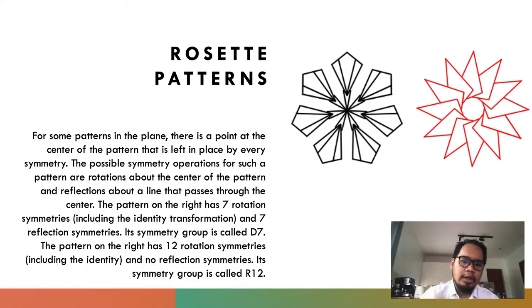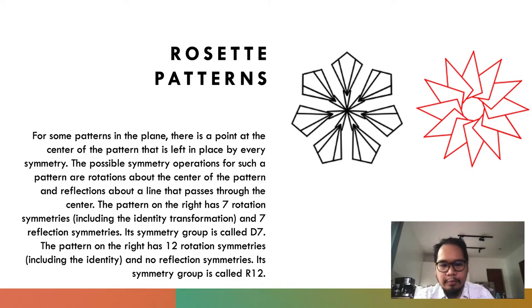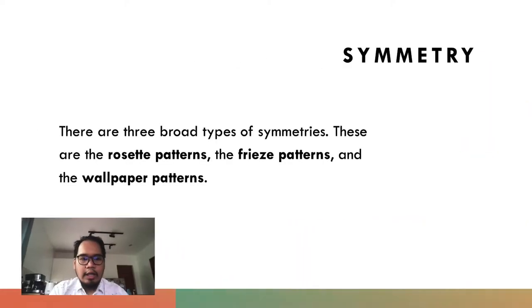In mathematics in the modern world, we're going to talk about symmetries and the different types of symmetries. We will recall that there are three major types of symmetries: the rosette patterns, the frieze patterns, and the wallpaper patterns.